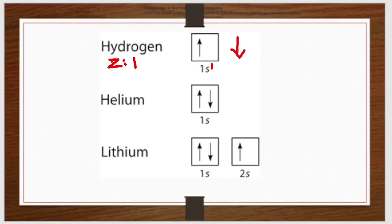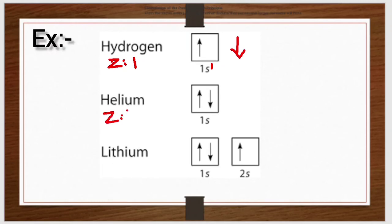The second example is helium. Helium has atomic number 2. The rule says the spin should be opposite. If both spins are the same — both up arrows — then it is wrong. Orbital electrons must have opposite spin.